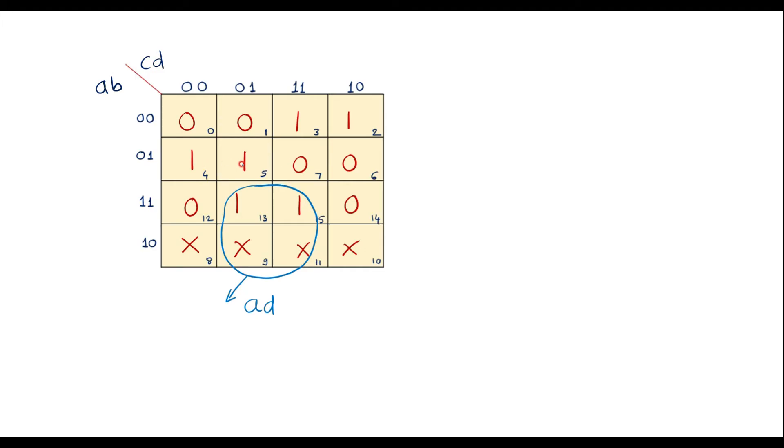Now here we have 1, 1 and here we have 1, 1. This 1, 1 can be done as a pair. This becomes a pair.